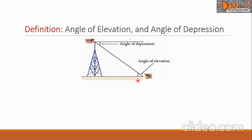The person on the ground will look up to the person on top of the tower, and he is making an angle of elevation. Meanwhile, that person on top of the tower will look down and see the person on the ground — upon looking, he is making an angle of depression. This angle here is the angle of elevation, and this angle here is the angle of depression.